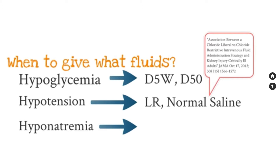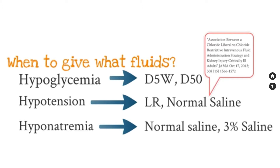For hyponatremia, commonly use either normal saline or 3% saline. If a patient is very hyponatremic and actively seizing, you want to get that sodium level up — in that case, use 3% saline, but do not increase it more than 10 milliequivalents within 24 hours. If they're hyponatremic and not actively seizing, use normal saline to bring them up slowly. If you're bringing them up too fast, use a hypotonic solution like D5 half normal to level off their sodium level and prevent central pontine myelinolysis.